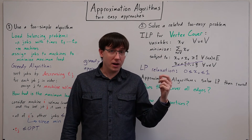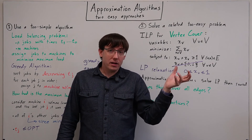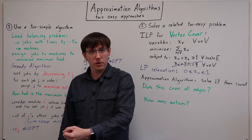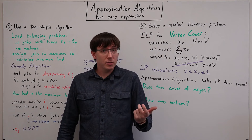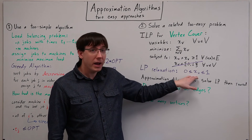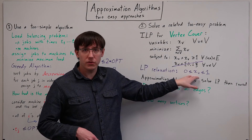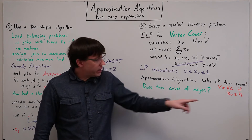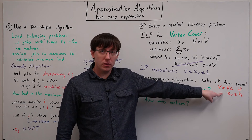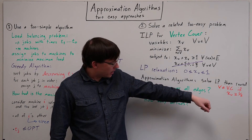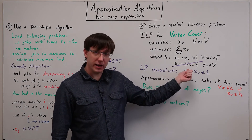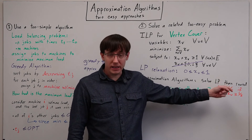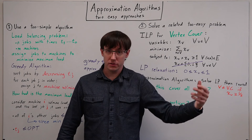So we need a way of translating that linear program solution into a vertex cover, and the key idea is to simply round the values we get back for each of our variables. If we round all of the variables, then we will end up selecting for the vertex cover all of the variables that had a value of at least a half when we solved the linear program.